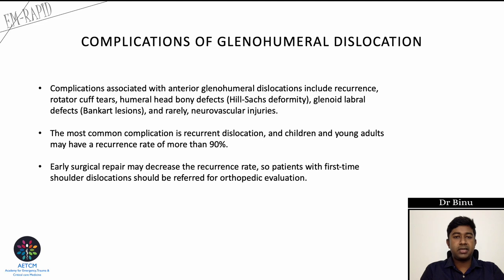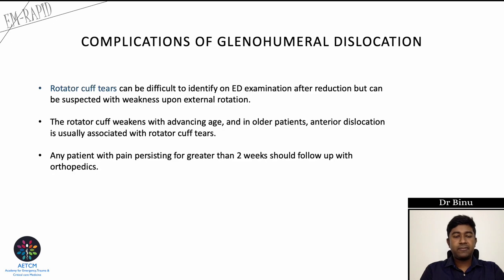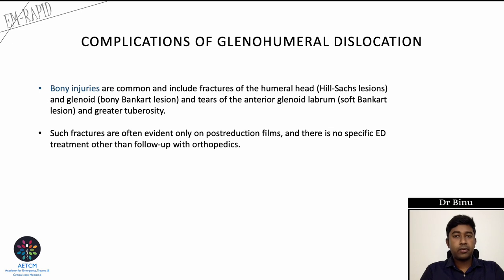Recurrent dislocation is the most common complication — in children and young adults, the chance exceeds 90%. Early surgical repair may decrease the recurrence rate, and patients with first-time dislocation should be referred for orthopedic evaluation. Rotator cuff tears can be difficult to identify in the ED after reduction but may be suspected if there is weakness on external rotation; any patient with persisting pain beyond 2 weeks should follow up with orthopedics. Bony injuries include fractures of the humeral head (Hill-Sachs lesions), glenoid (bony Bankart lesion), anterior glenoid labrum tears (soft Bankart lesion), and greater tuberosity fractures.